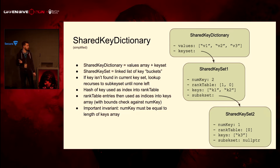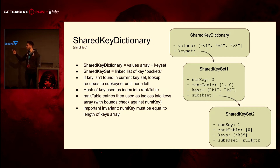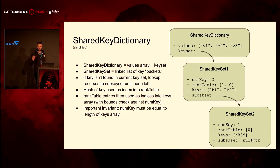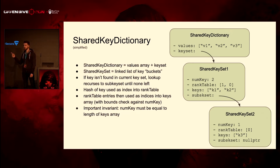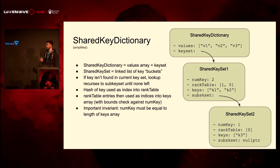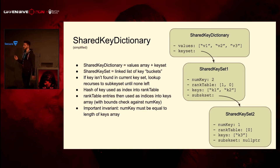The way the lookup works: say you want to look up K3. You go to the first shared key set, hash the value K3, and use that as an index into the rank table. The rank table gives you an index into the keys array. That index is bounds-checked against num_key.